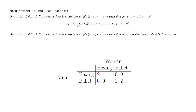First, we'll find the man's best response when the woman plays boxing. If the woman plays boxing and the man responds boxing, he receives payoff 2 in red. If he responds ballet, he receives payoff 0 in blue. The man prefers 2 to 0, so his best response to the woman playing boxing is to play boxing himself. We'll underline the 2 to record this information.